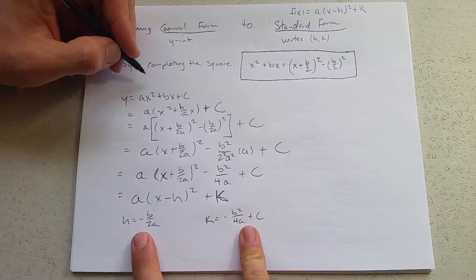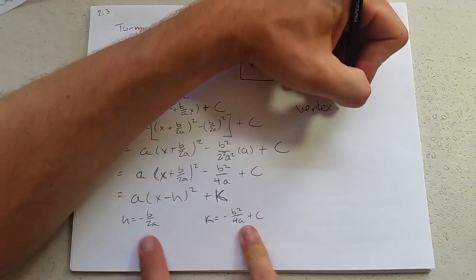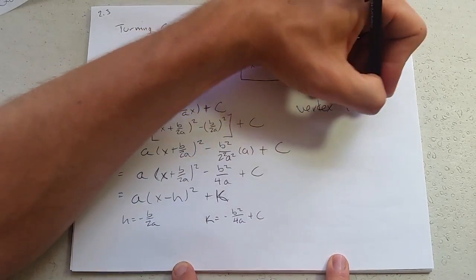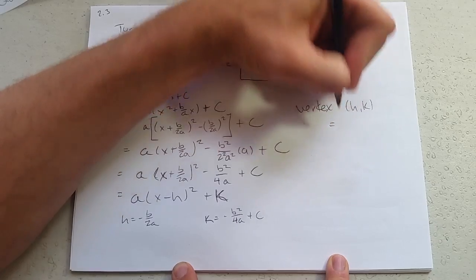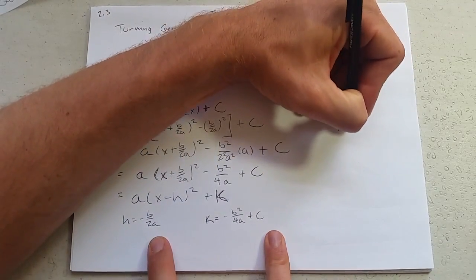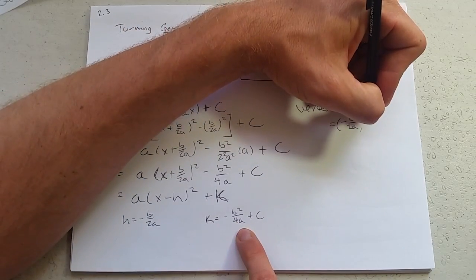These right here are called the vertex when you take them together. So vertex is hk, which in our case for quadratics is negative b over 2a. Now this looks like a beast to remember. So what I recommend...